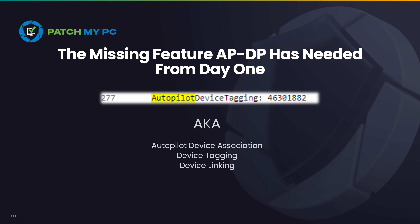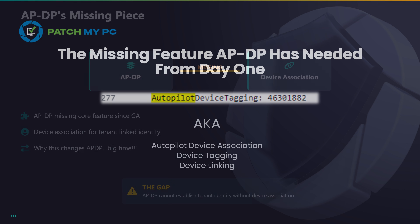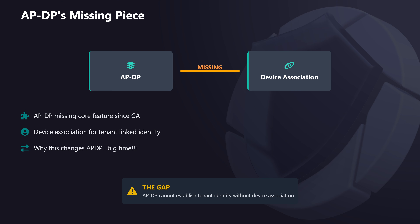That feature is called device association, aka device linking. It's a real built-in tenant association that happens before the user signs in to start the autopilot device preparation enrollment. And once you understand what this feature is meant to do, you may want to start using APDP as well.